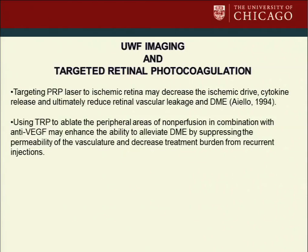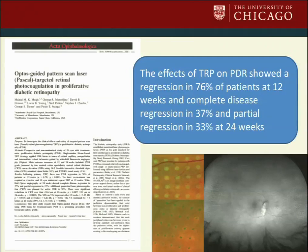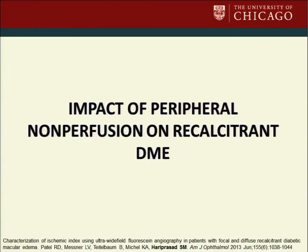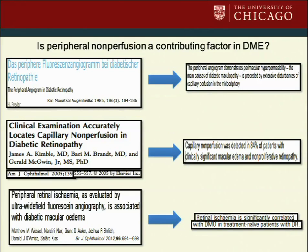It's possible that using targeted retinal photocoagulation to ablate peripheral areas of non-perfusion in combination with anti-VEGF may enhance the ability to alleviate diabetic macular edema by suppressing the permeability of the vasculature and decrease treatment burden, especially in a disease where the rate of bilaterality may be as high as 60%. A study by Stanga and colleagues showed that the effects of targeted retinal photocoagulation on PDR showed some level of regression in 76% of patients as early as 12 weeks, and complete disease regression by 12 weeks in 37% of patients. We also have done our own research looking at the impact of peripheral non-perfusion on recalcitrant diabetic macular edema.